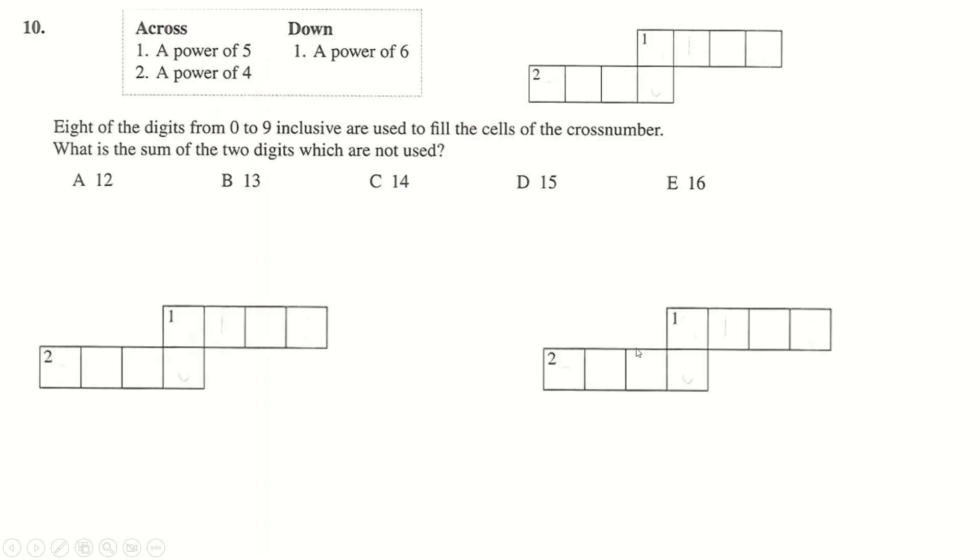Question number 10, working downwards first, because that's the smallest one, a power of 6. The only two-digit power of 6 is, you're allowed to use 0, notice. The only two-digit power of 6 is 06, which is 6 to the 1, and 36, which is 6 to the 2. So I decided to just run with both of those and see which one ended up not working. Now I think next I looked at powers of 5. So the powers of 5 are this, this, this, and this. If you times that by 5, you get a 5-digit number, so that's too big.